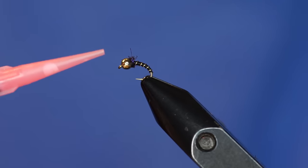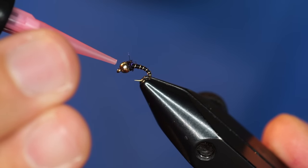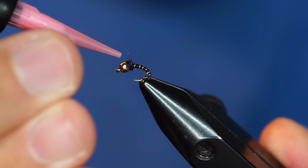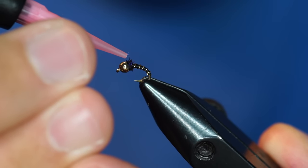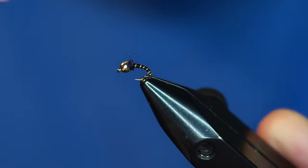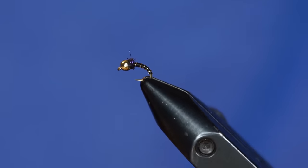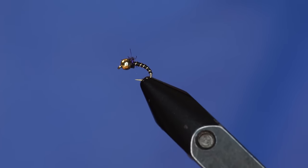To finish it off, I'm just going to put a little bit of this head cement. Because it's such a small fly, the easiest way to do this is just put a little bit on the bead and it will run down into those thread wraps. A little bit more than I wanted, but that's fine. See how that just seeped right in? There you have it. There's a Zebra Midge.